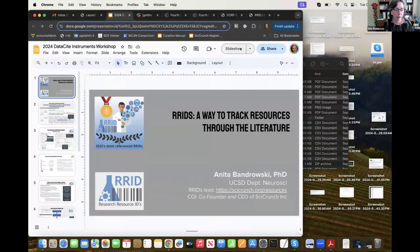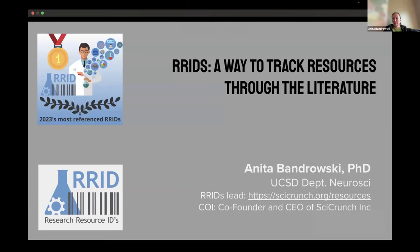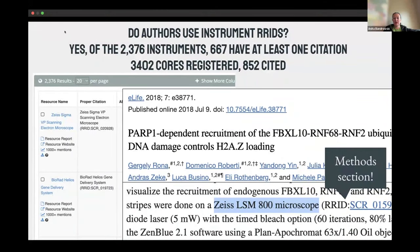I'm going to go really, really fast. We started RRIDs way back in 2014, primarily around biological key biological resources, and also software tools associated with various key biological resources that we needed to track throughout the literature. We have expanded, with the help of Annie Glarum's and Claudius Maderma's group, to include instruments. That group, and investigators themselves, have included 2,376 instruments into the RRID framework.